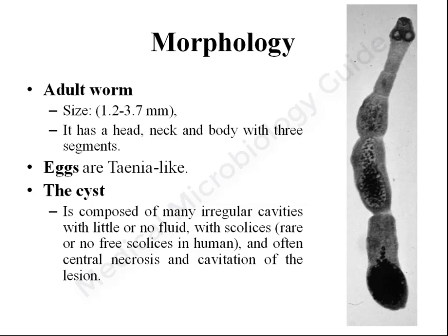The cysts, which are the larval form, are found in the intermediate host. The cysts are composed of many irregular cavities which may have little or no fluid. Compared to the cyst of Echinococcus granulosus, which is unilocular and filled with hydatid fluid, the multilocularis cysts contain scolices. However, in humans as accidental hosts, we do not see scolices inside the cyst. There will be central necrosis and cavitation of the lesion.